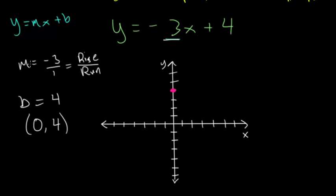And then we'll use slope to find a second point. So our rise is negative 3, so that means we're going to go down 3. And then our run is positive 1, we're going to go to the right 1. Like I said, we always go to the right. The negative just tells us we're going down and then to the right rather than up and to the right.